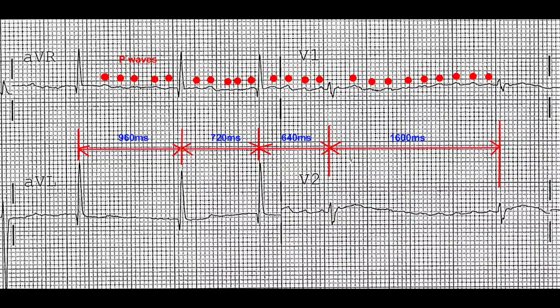The irregularly irregular rhythm can be seen here on this EKG, and this means that the rhythm is irregular — the QRS is not consistently pulsing. You can see how the spaces between the QRS complexes change, meaning there isn't a consistent rhythm. This rhythm is irregularly irregular.